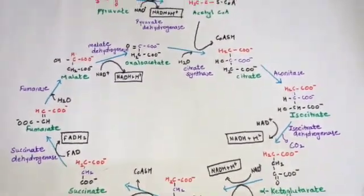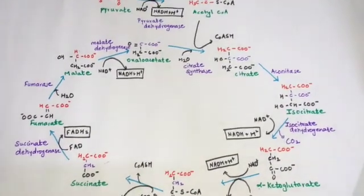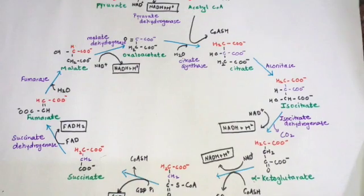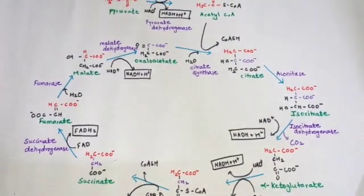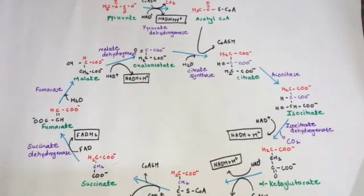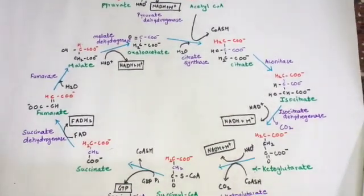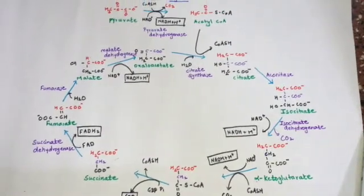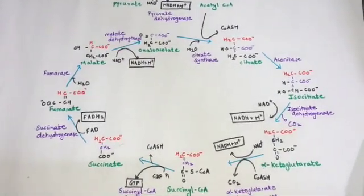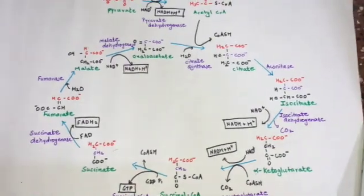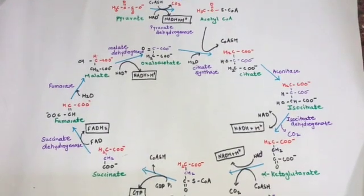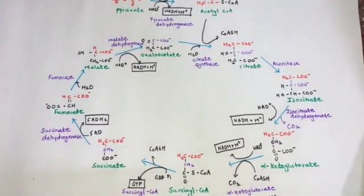To summarize, whenever there is a dehydrogenase enzyme, NAD+ is converted to NADH and H+. Energy is generated in the form of GTP and NADH. This is the overall TCA cycle and how energy is produced through its reactions.